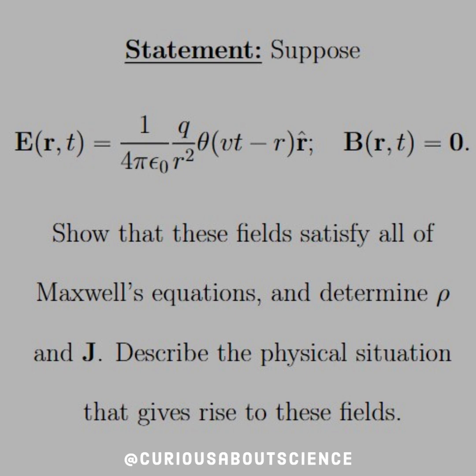Moving forward, the statement says suppose that E, which is a function of r and t, is equal to 1 over 4π epsilon naught, q over r squared, times theta of vt minus r, r hat, and B of r of t is equal to 0.